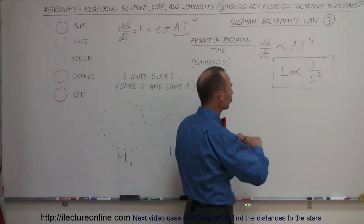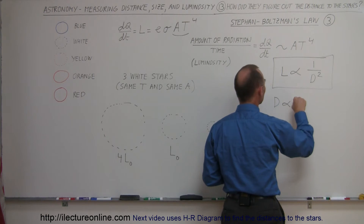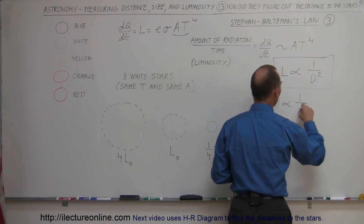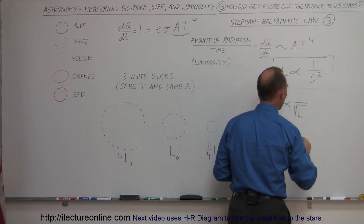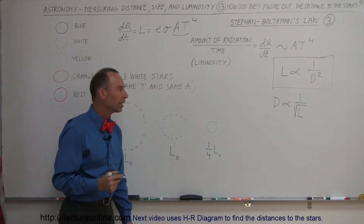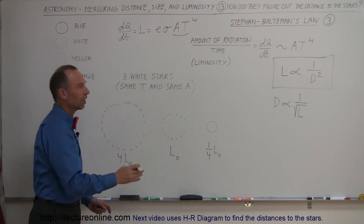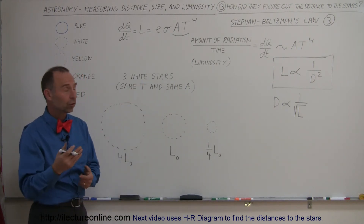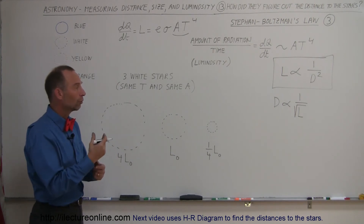If that is true, we can say that distance is proportional to one over the luminosity — and then we take the square root of that. So rearranging that proportionality, the distance is proportional to one over the square root of the luminosity.